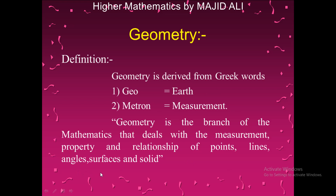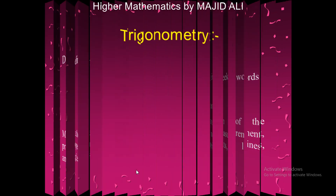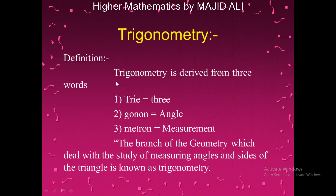Now we define trigonometry. Trigonometry is also derived from three words: 'tri', 'gon', and 'metron'. 'Tri' means three, 'gon' means angle, and 'metron' means measurement. In one sentence, trigonometry is the branch of geometry which deals with the study of triangles — measuring the angles and sides of a triangle.